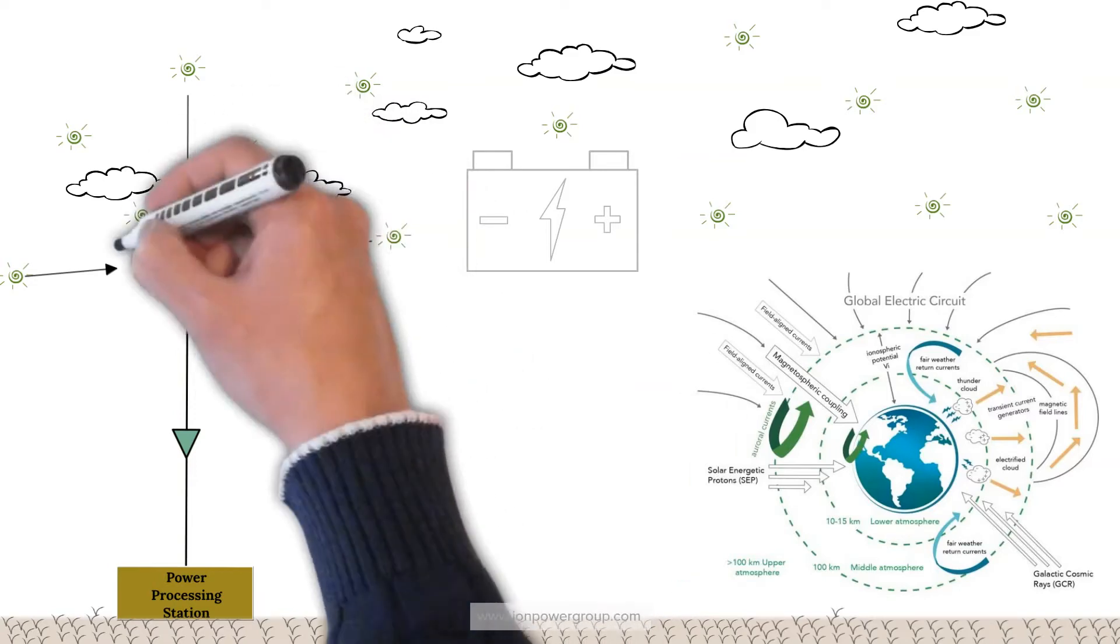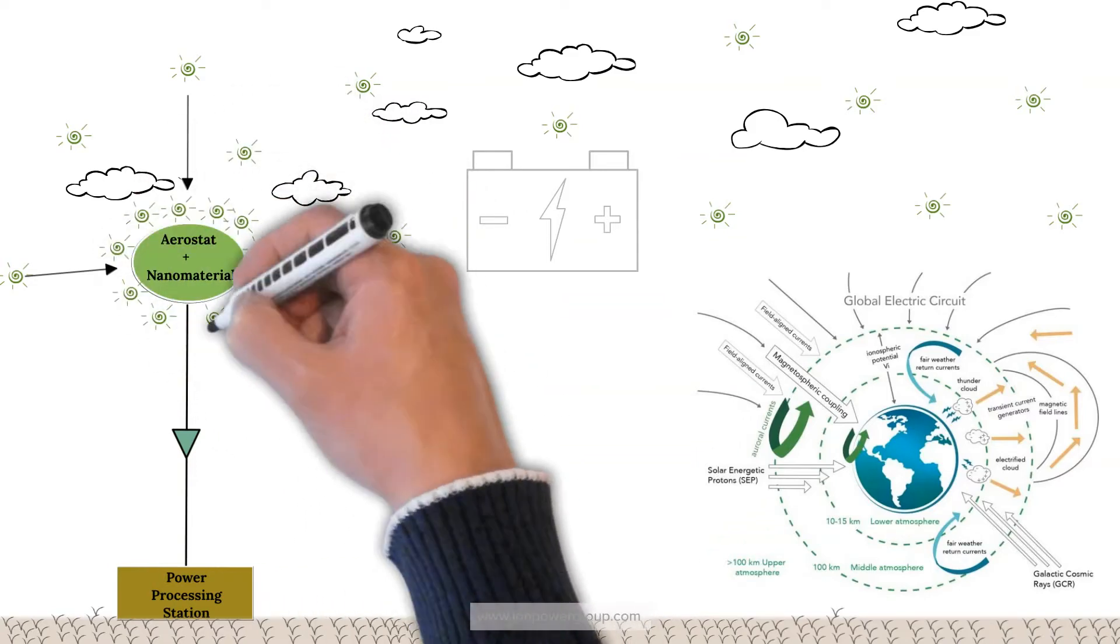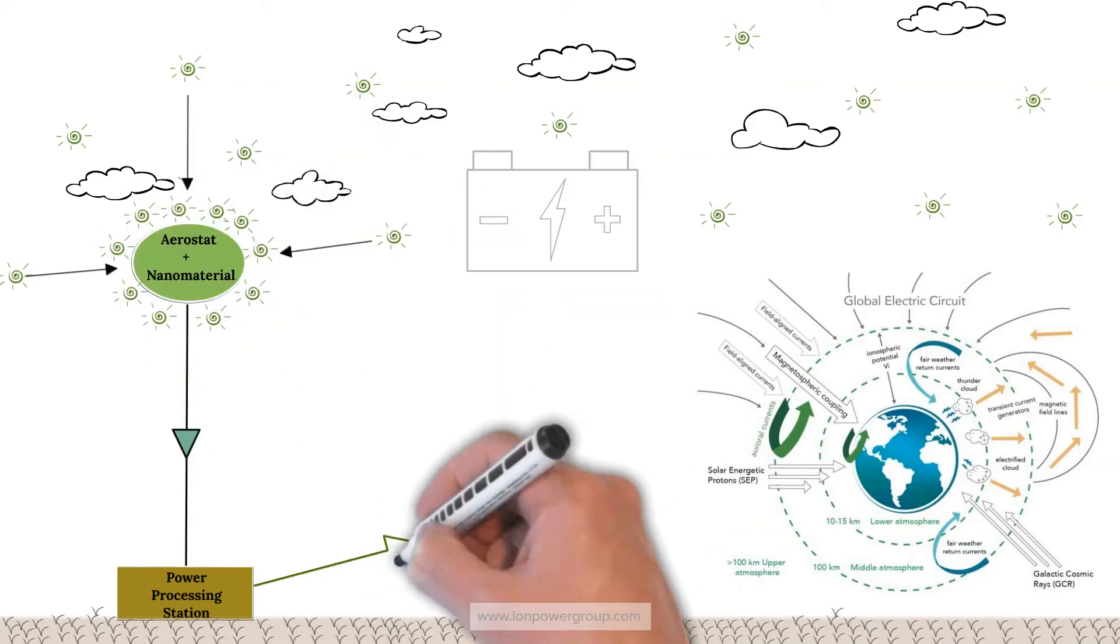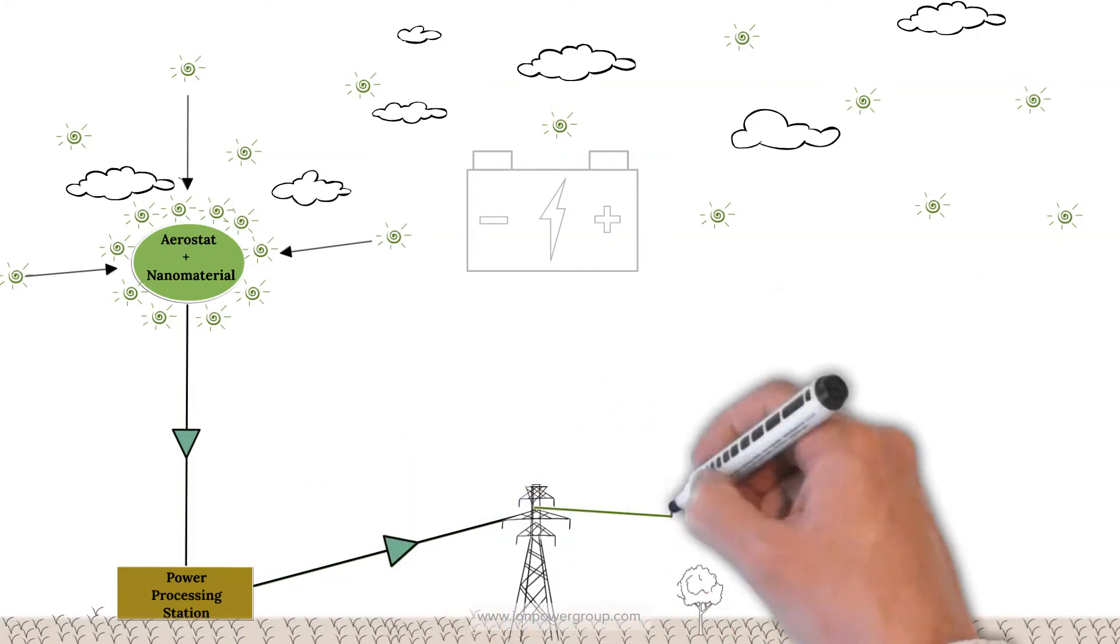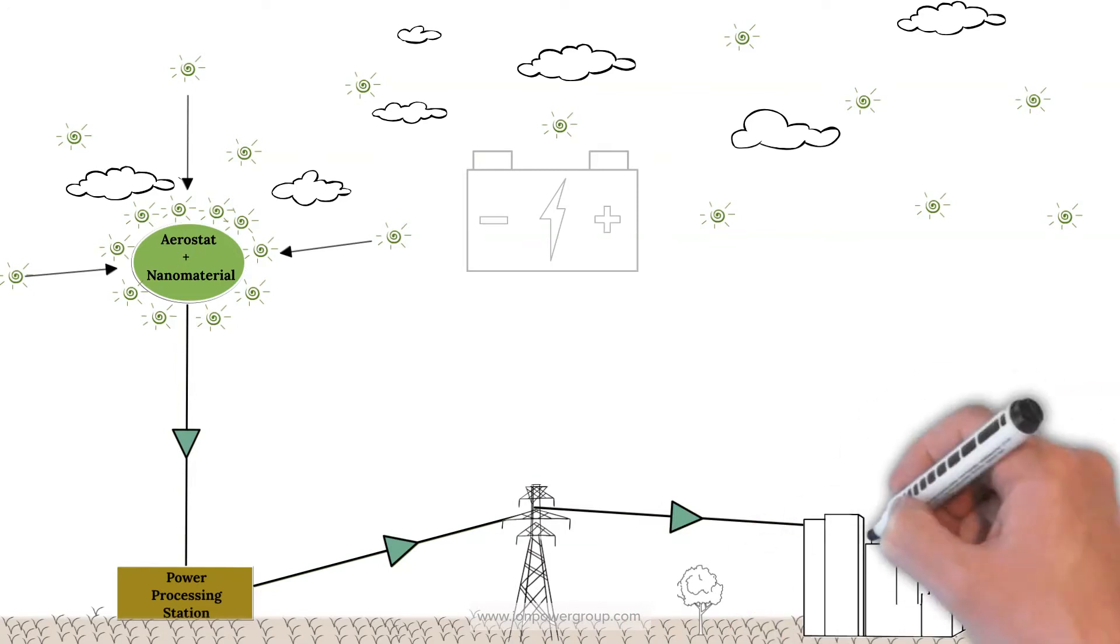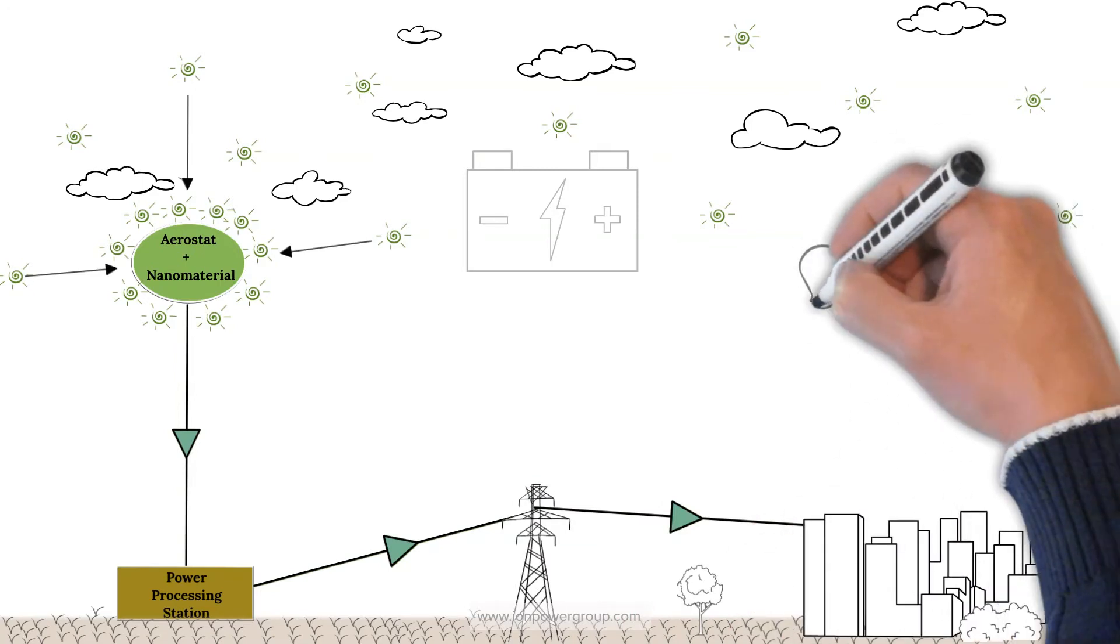Trillions of electrically charged ions electrocouple to our patented nanomaterial that absorbs high-voltage electricity that is then conveyed down a conductive tether to the ground where it can be processed and used for many future purposes.